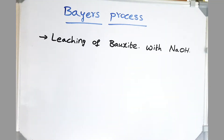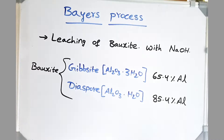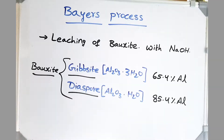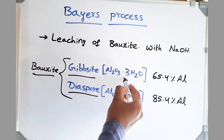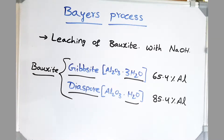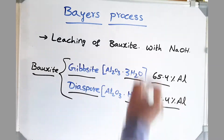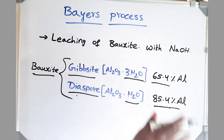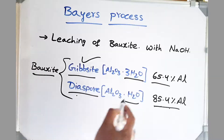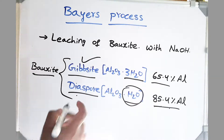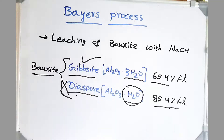Bayer's process is leaching of our ore bauxite with NaOH. The major constituents of bauxite are gibbsite and diaspore. Gibbsite consists of three molecules of water and diaspore consists of one molecule of water. Diaspore consists of 85.4% aluminum, comparatively far higher than gibbsite. But because it is a monohydrate, its dissolution or leaching is difficult compared with gibbsite.